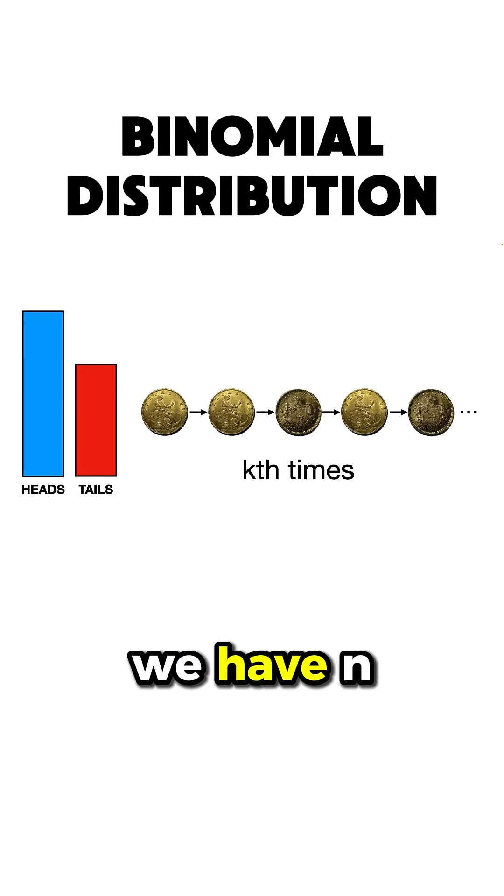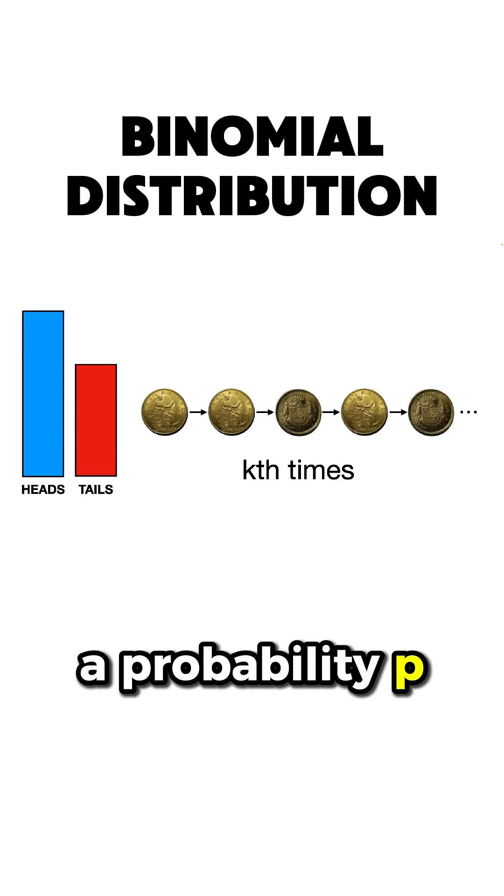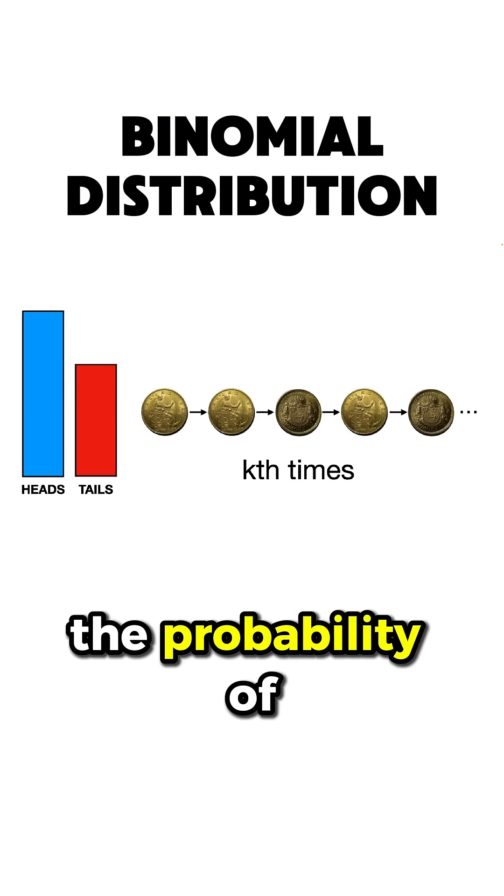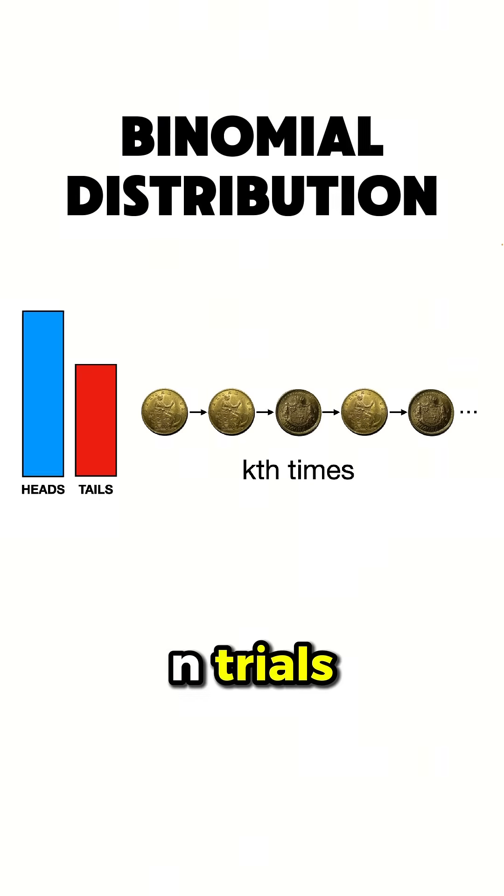In a binomial distribution, we have n trials, each with a probability p of success, and we want the probability of seeing exactly k successes in those n trials.